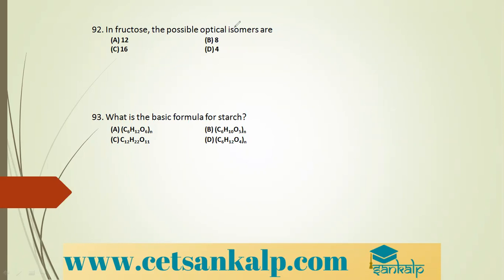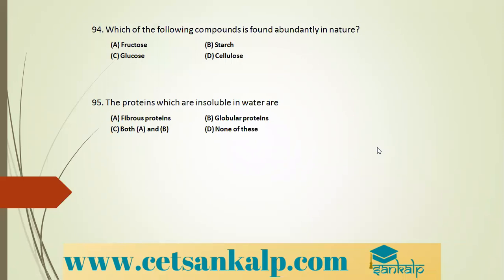Q: Which compound is most abundantly found in nature? It is cellulose — the main constituent of all plant cells. Q: Proteins soluble in water are globular proteins. Fibrous proteins (e.g., keratin in skin, nails, hair) are insoluble in water because their hydrophobic R groups are directed outward, repelling water.